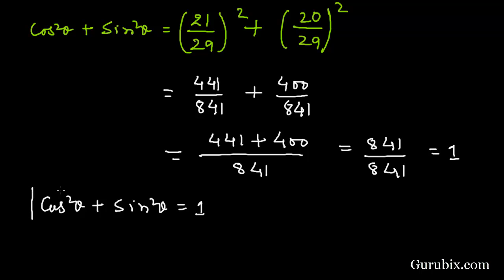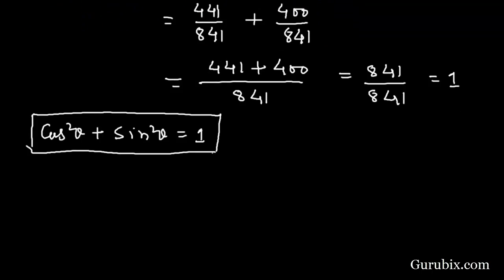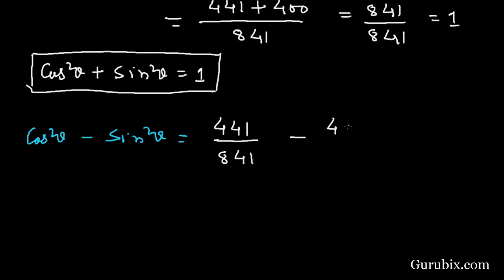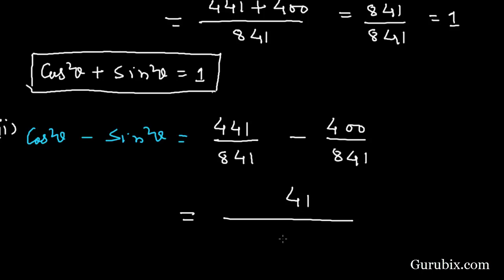This is the basic identity of trigonometry. Now we shall find cos squared theta minus sin squared theta. We have cos squared theta as 441 over 841, and sin squared theta as 400 over 841. So this equals 441 minus 400 over 841, which equals 41 over 841. This is the solution of the question.